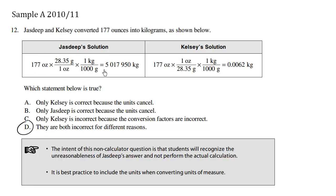Let's look at the first solution. We have 177 ounces and we want to convert it to kilograms, so we're multiplying this original amount by this fraction here. Now you're allowed to multiply by 1. Anything times 1 is itself. So as long as the numerator and the denominator are the same, that's fair game.